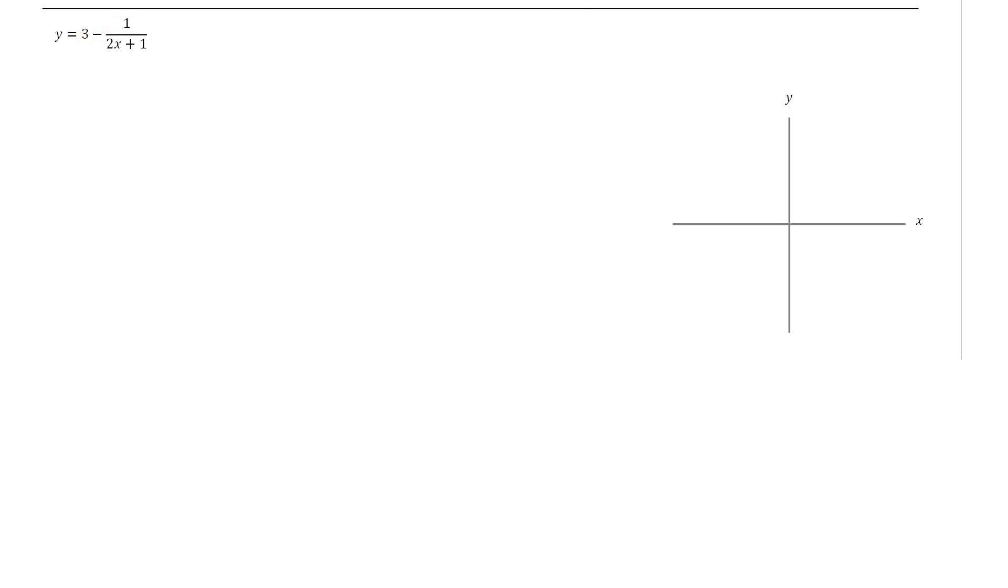Here we have our next rule, and we need to state the implied domain and the range. We need to be able to look at this and immediately recognize the type of graph it is.